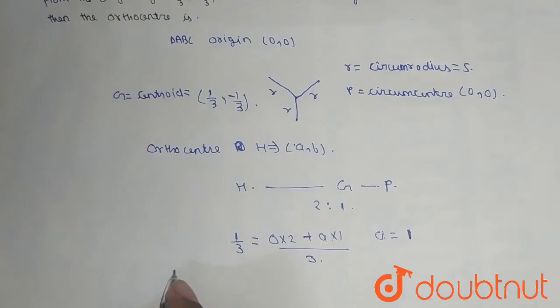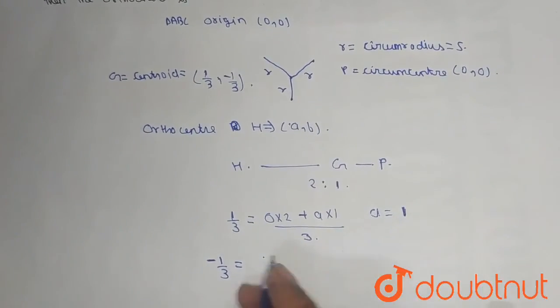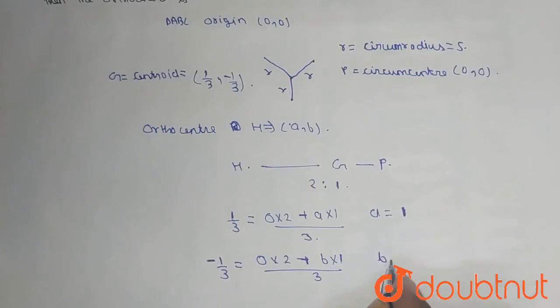Now we have to find the value of B. -1/3 is equal to (0 × 2 + B × 1) divided by 3. So from here we will get the value of B is equal to -1.